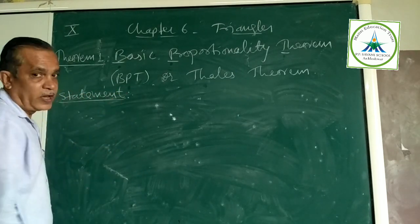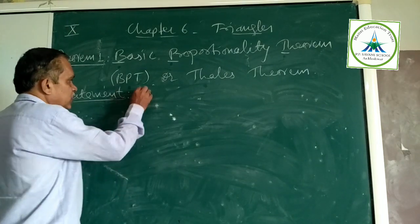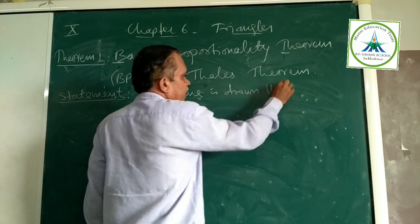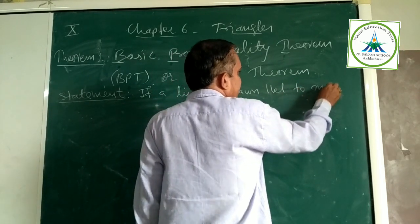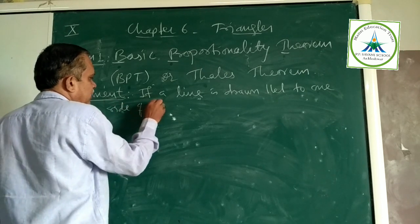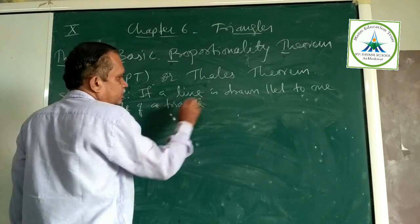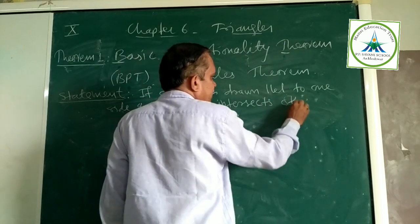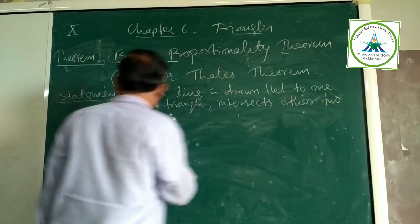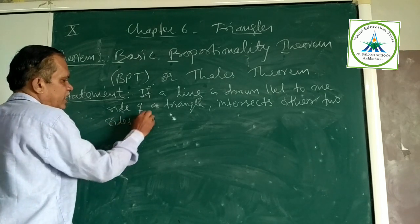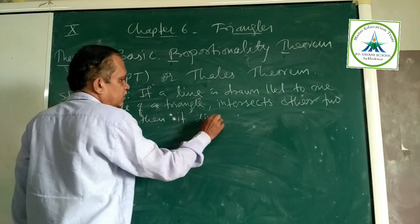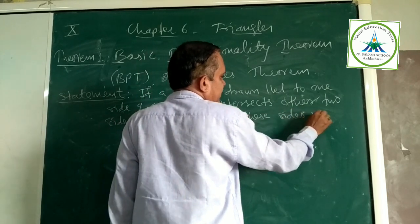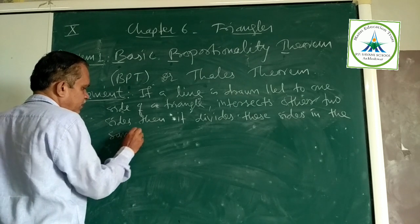Statement. Very important theorem. By reading the statement, we will be able to draw a diagram. Let me see now. If a line is drawn parallel to one side of triangle, whether the line intersects other two sides, then it divides these sides in the same ratio.